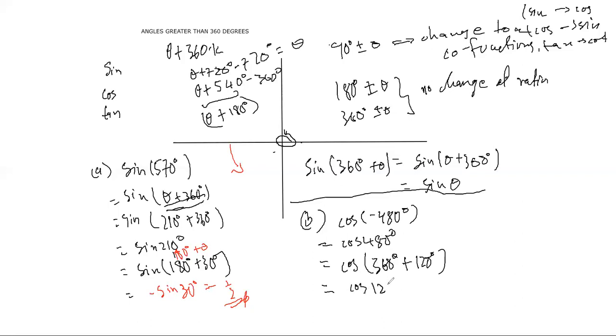And then what is the reduction of 360 plus theta? We said the ratio does not change. So cosine remains cosine, and it must be cosine 120. Now how can I express cosine 120 in terms of a special angle? There are two ways to do this at this point, and so I will do both ways for you.